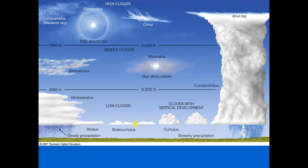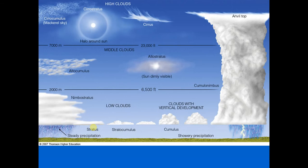Rain or snow rarely falls from stratocumulus, though it may produce some drizzle — but drizzle droplets are so small they often evaporate before reaching the ground. Stratus is the uniform grayish cloud that often covers the entire sky, making it very dark. It's very thick so it reflects a lot of sunlight and keeps it cooler. When stratus is on the ground, we call that fog. Drizzle may fall from stratus, which is very common in San Francisco in the summertime.